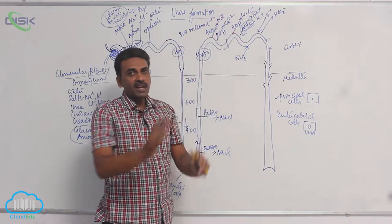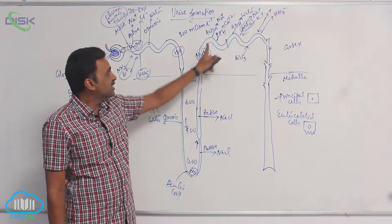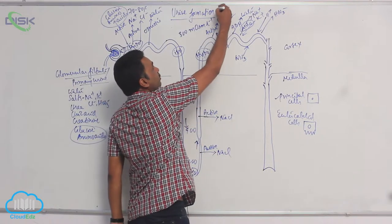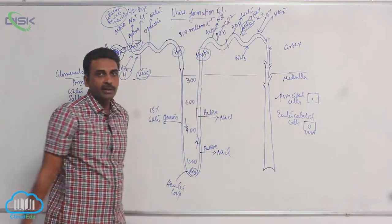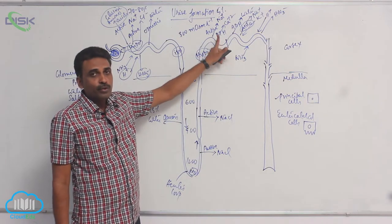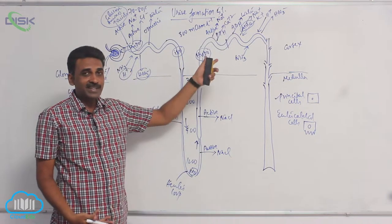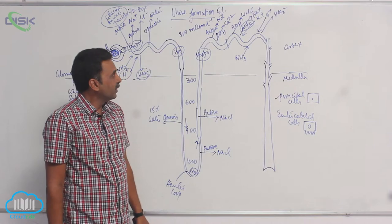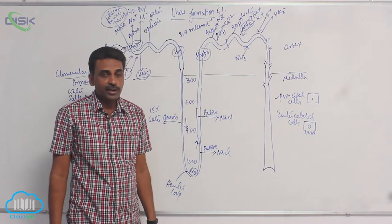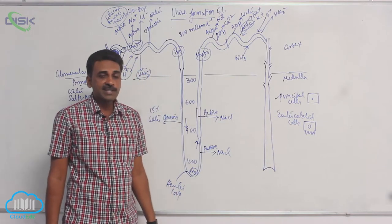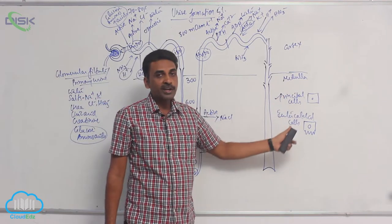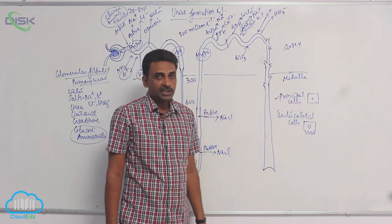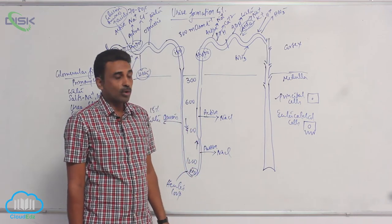To summarize the distal convoluted tubule: at the beginning, around 5% of sodium chloride is actively transported back into the body, and calcium ions are reabsorbed under the influence of parathormone. In the later half of the distal convoluted tubule and in the collecting duct, there are two cell types — principal cells and intercalated cells. Principal cells are more numerous and lack a brush border, whereas intercalated cells have a brush border or microvilli.